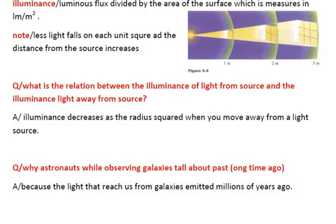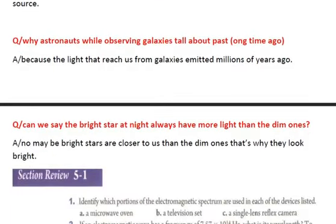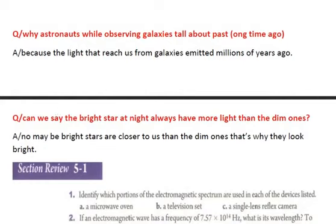Now we have some special cases. The question asks: why do astronauts while observing galaxies talk about the past or long time ago? The answer is because the light that reached us from galaxies was emitted millions of years ago. So the light that reached us from stars takes millions of years because of the large distance between us and the stars, except the sun of course.